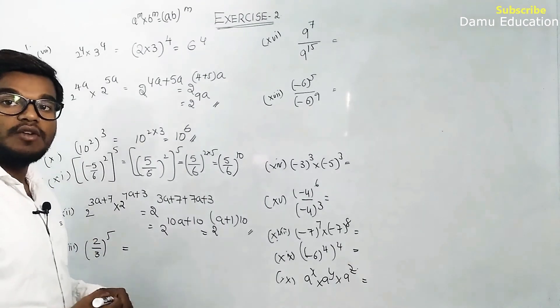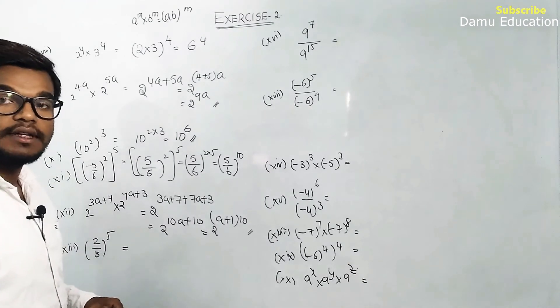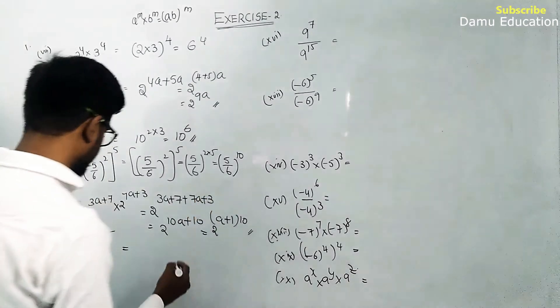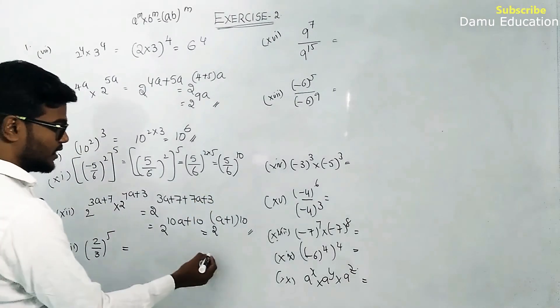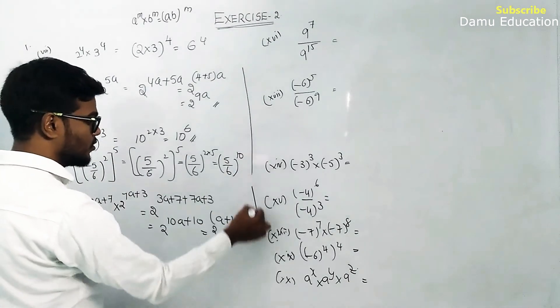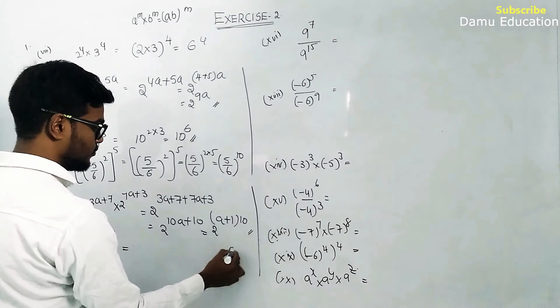Next: 2 by 3 whole power 5. Using the formula a by b whole power m, we can divide a and b separately.